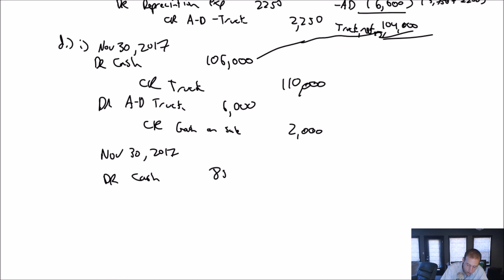November 30th, 2017. Debit cash, this time just for $85,000. We got to get rid of the truck. So we credit truck for $110,000. We got to get rid of any accumulated depreciation on the truck. So debit AD truck for $6,000. I look at this journal entry and I'm imbalanced. I have $91,000 in debits. I have $110,000 in credits. I'm off by $19,000 in debits. I debit loss on sale.